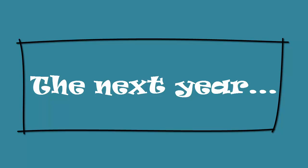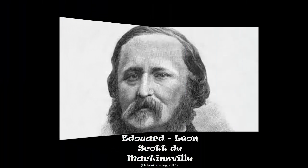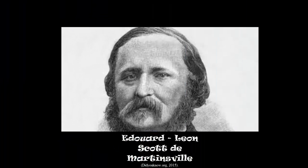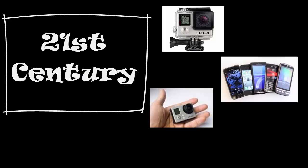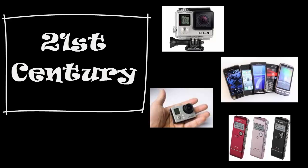A year later, a man called Eduard Leon Scott de Martinsville invented a different video camera that could record onto a thin layer of film. This data was recorded onto this film. This camera could only film in black and white and didn't film sound, something similar to silent movies.